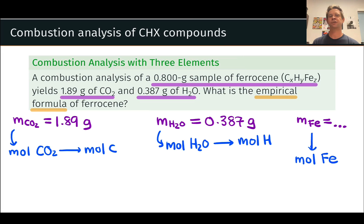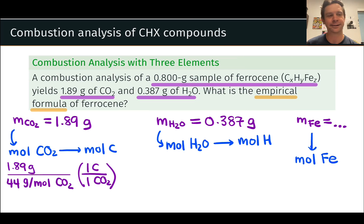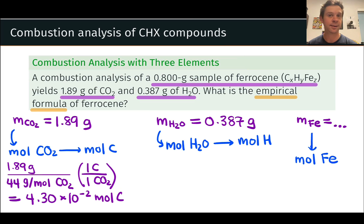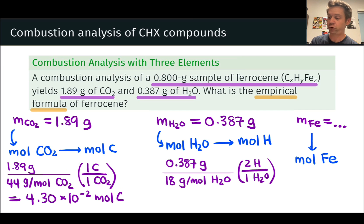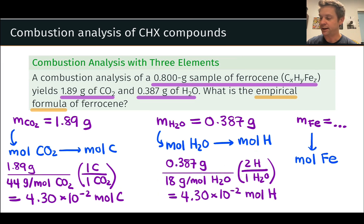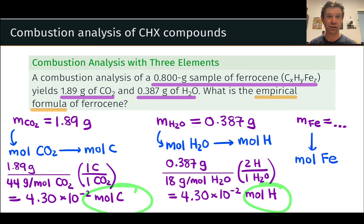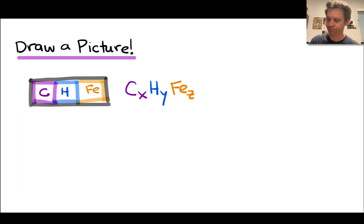We'll start by going through the standard combustion analysis method to determine moles of carbon and moles of hydrogen. We take 1.89 grams of CO2, divide by the molar mass of carbon dioxide, and use the fact that there is one carbon in each molecule of CO2. This gives us 4.3×10⁻² moles of carbon. Similarly, keeping in mind that there are two hydrogens in one molecule of H2O, we divide 0.387 grams by the molar mass of water (18 g/mol), and we get 4.3×10⁻² moles of hydrogen. With moles of carbon and hydrogen numerically equal, the molar ratio of carbon to hydrogen is 1:1, meaning X and Y in our empirical formula must be equal.